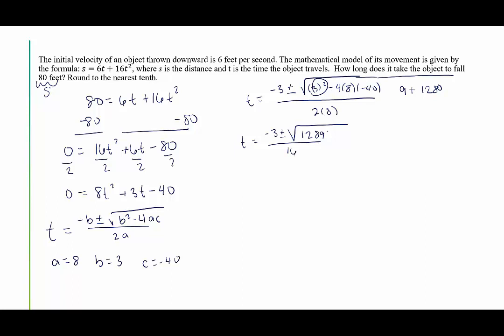Now it does say to round to the nearest tenth, so let's take the square root of 1,289. We're not going to simplify, we're going to just take the square root. And now we get approximately, so I'm going to use the approximately sign. Negative 3 plus or minus 35.9 when I take the square root, divided by 16. So now we want to separate this into two, the positive and the minus. This will be negative 3 plus 35.9 divided by 16. Negative 3 minus 35.9 divided by 16. When I look at that top one, I know this is going to be about 2 seconds. Negative 3 plus 35.9 would be 32.9 divided by 16. And we get just over 2, 2.1 seconds.